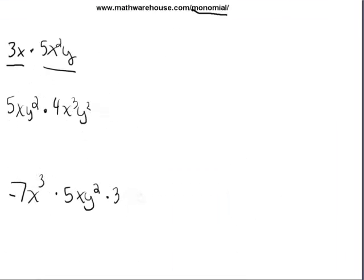We're going to multiply two monomials. And basically, it's going to boil down to the following steps. The first step is to group your terms. So let's group the coefficients. 3 times 5.